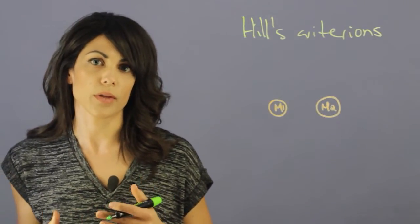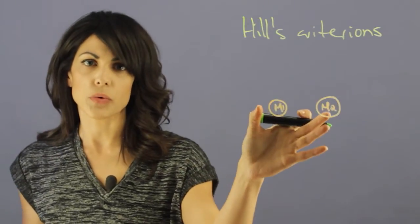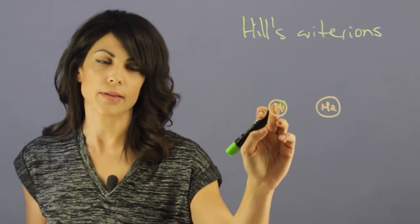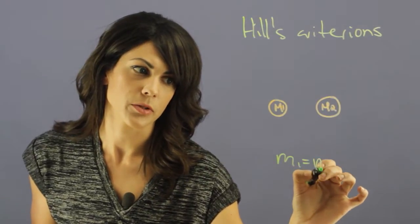And for this video, I'm going to give an example of one of the Hill's criterions. Let's say you have two stars, and they have the same mass. So, m1 is equal to m2.